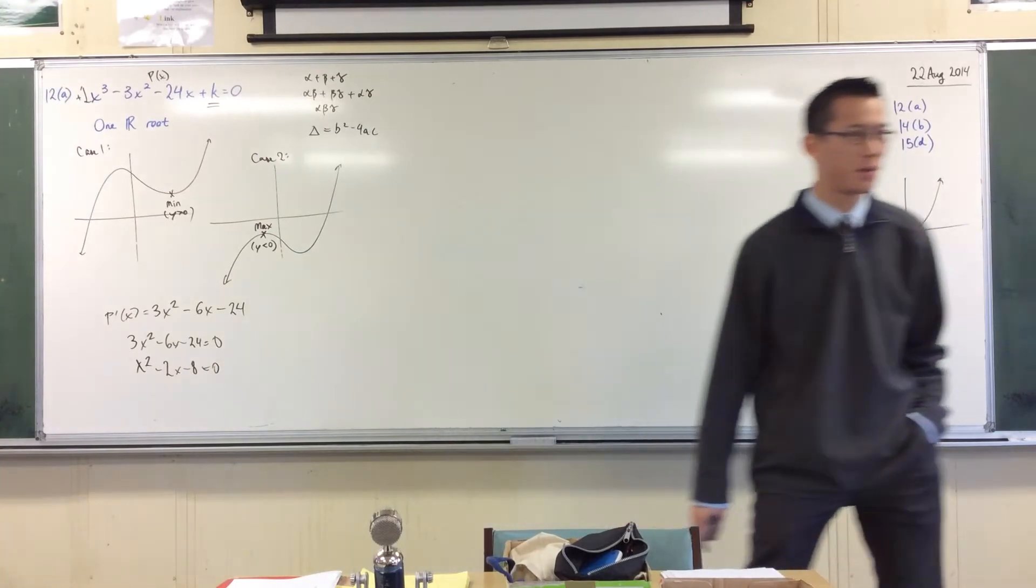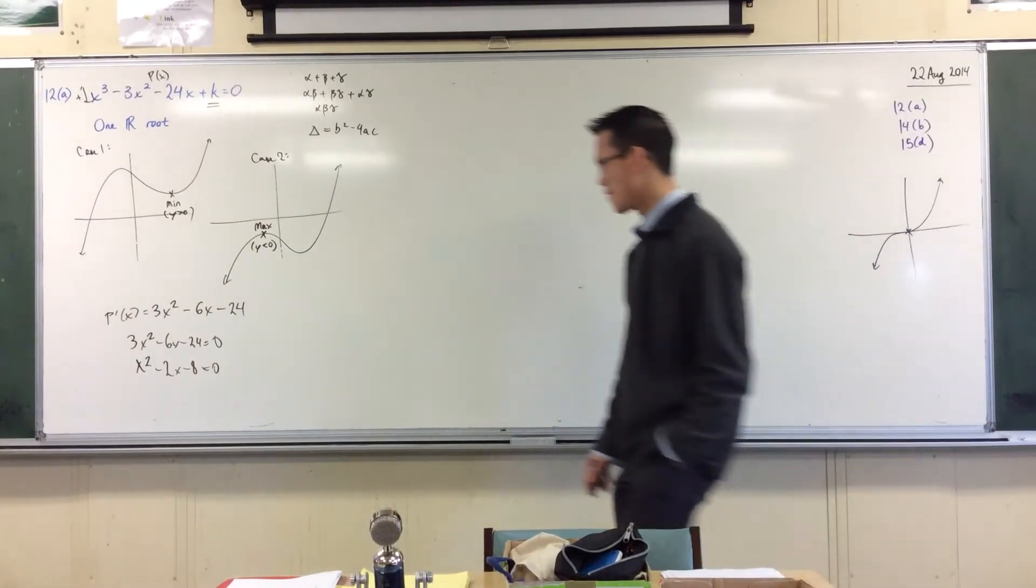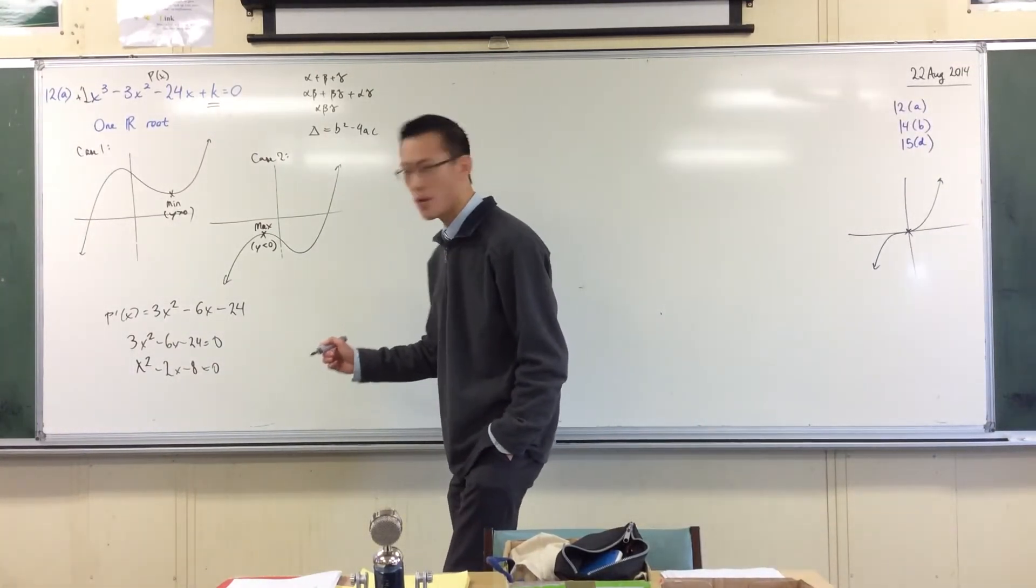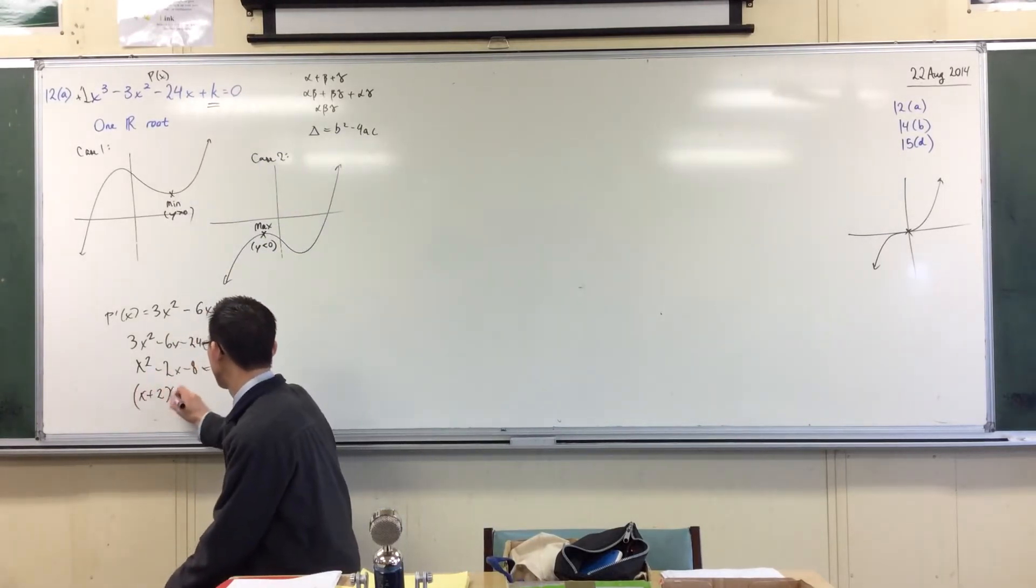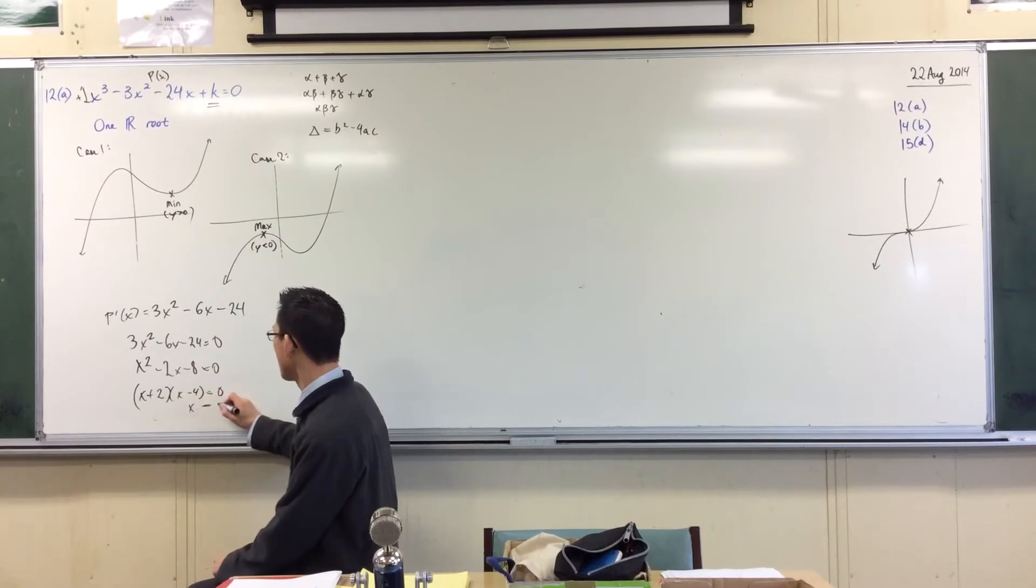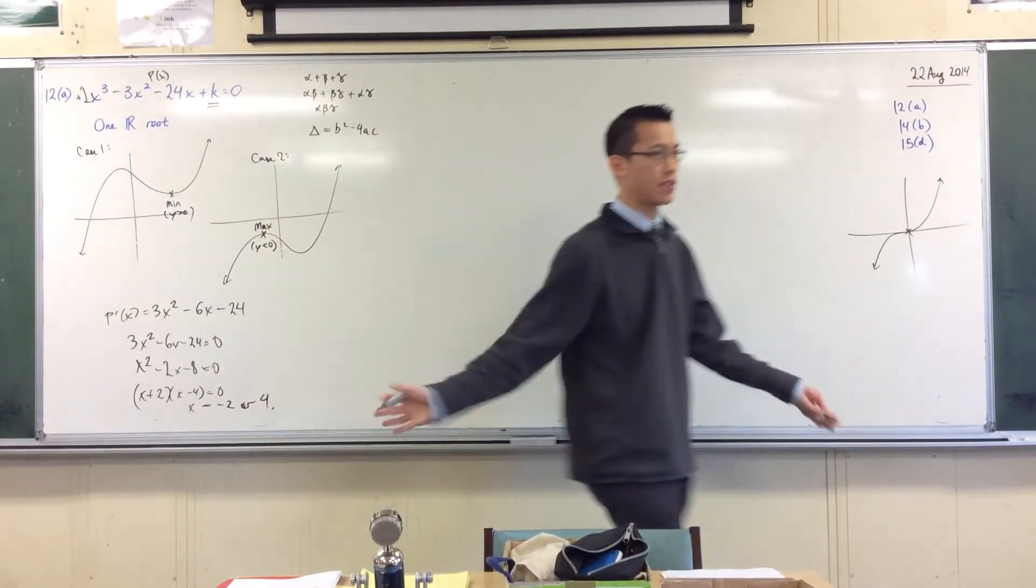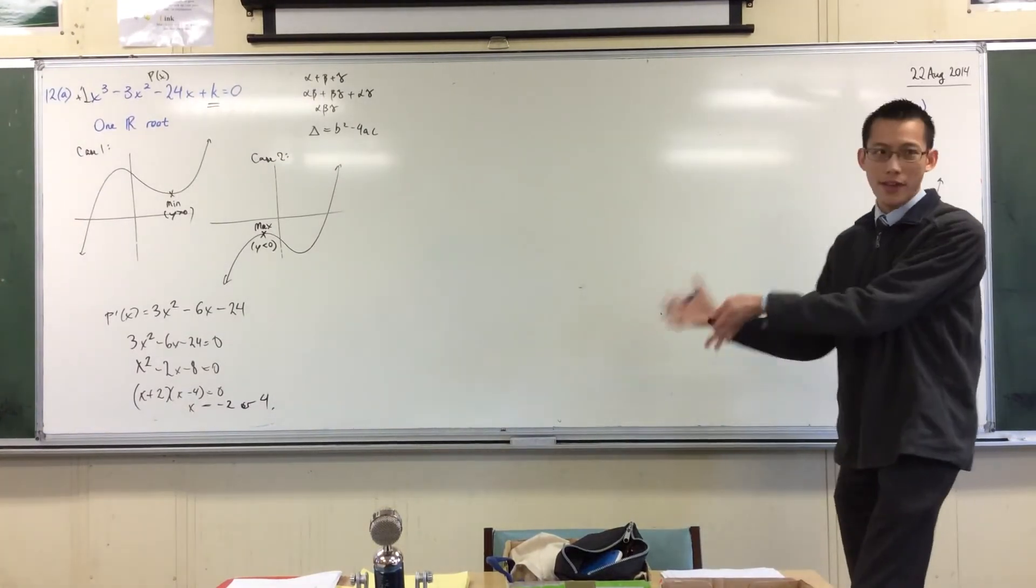So when you solve that, 3x squared minus 6x minus 24 equals zero for stationary points. You get, we can divide by 3, obviously. So you get x squared minus 2x minus 8 equals zero. Factorize for me. It's a nice easy one. What are our factors? 2 and negative 4. So you're going to get (x - 4)(x + 2) = 0. So now I know I have stationary points here. Stationary points there.